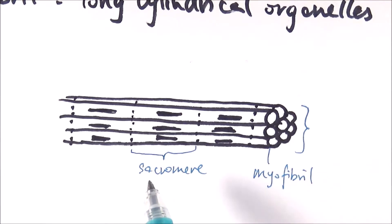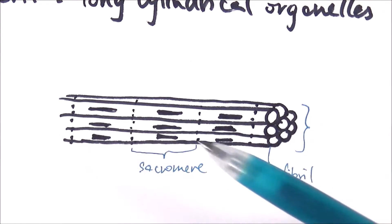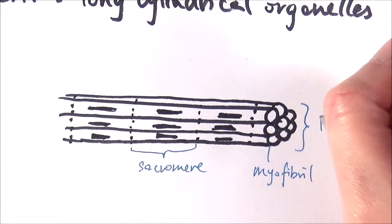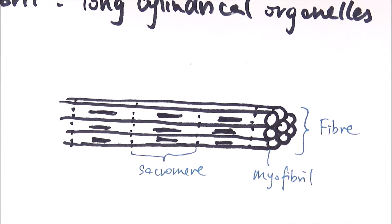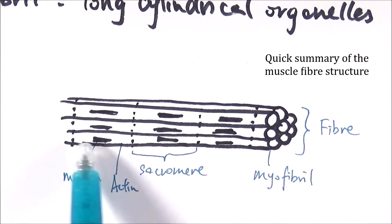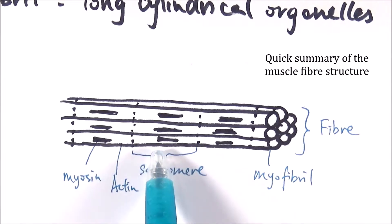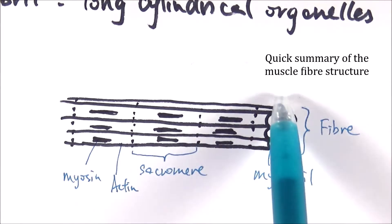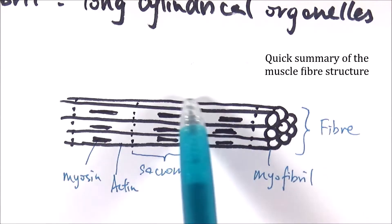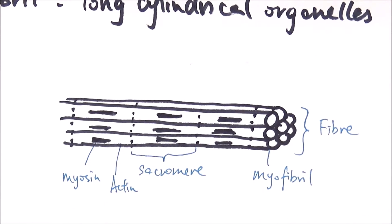All these myofibrils are wrapped together by the sarcolemma, which is the plasma membrane, and the whole thing also contains the sarcoplasm inside along with the sarcoplasmic reticulum. The whole thing is considered one muscle fiber. Imagine having multiple muscle fibers all bundled up together to make up the whole muscle.